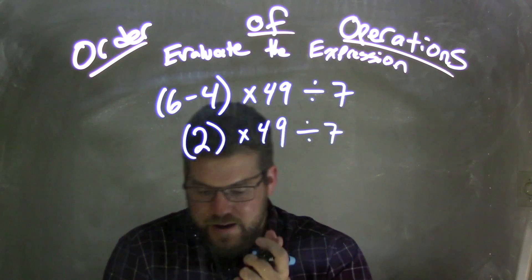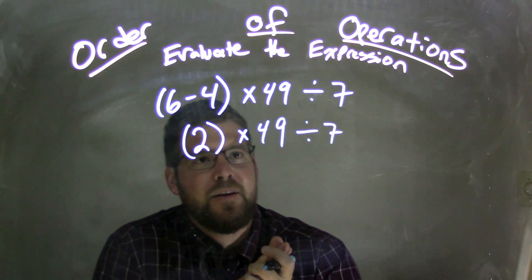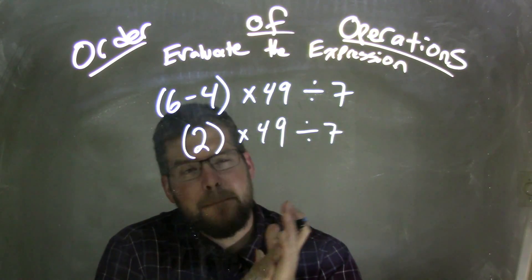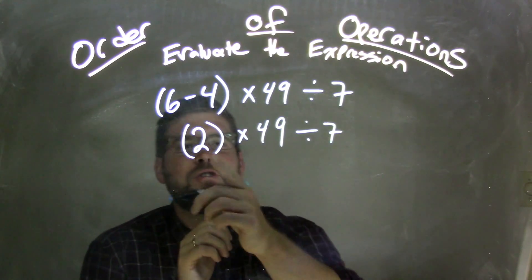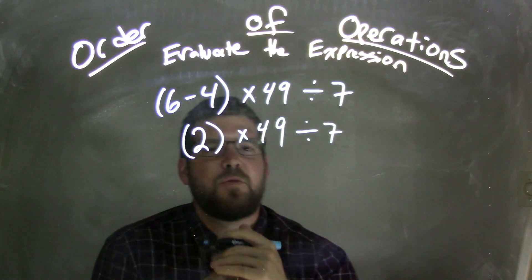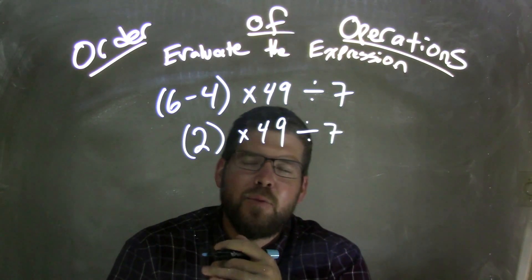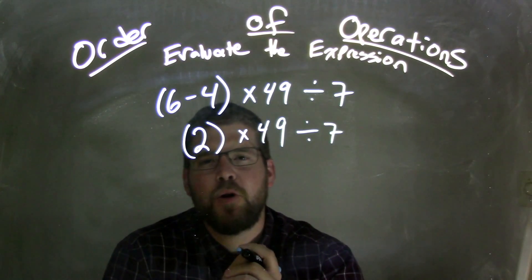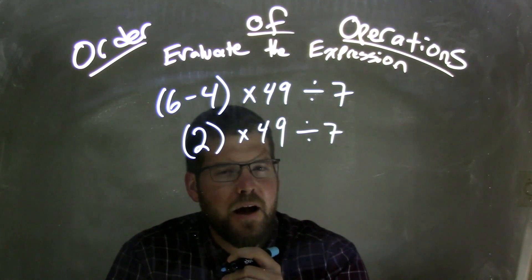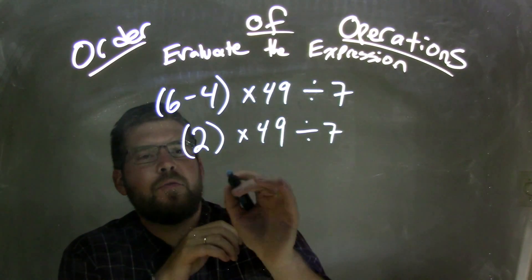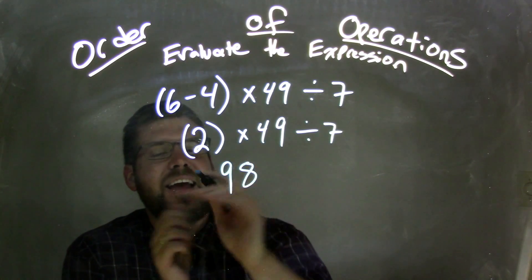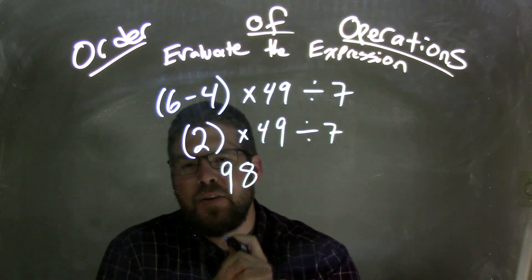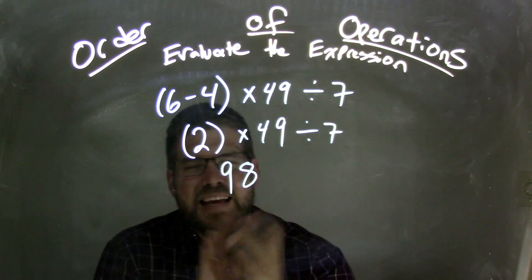Now here's the tricky part. Multiplication first. It really doesn't matter in this case, but let's go deal with it this way. 2 times 49 — what does that come out to be? If you don't know off the top of your head, don't rush to that calculator. 2 times 49 comes out to be 98. The way I quickly do it: 2 times 50 is 100, minus 2 is 98.